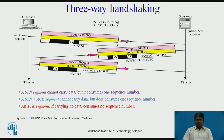Third, the client sends the third segment — just an ACK segment. It acknowledges the receipt of the second segment with the ACK flag and acknowledgement number field. Note that the sequence number in this segment is the same as the one in the SYN segment. The ACK segment does not consume any sequence number. The client must also define the server window size. In this case, the third segment must have a new sequence number showing the byte number of the first byte in the data. An ACK segment, if carrying no data, consumes no sequence number.